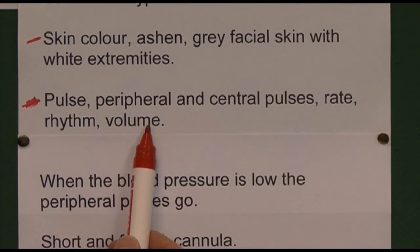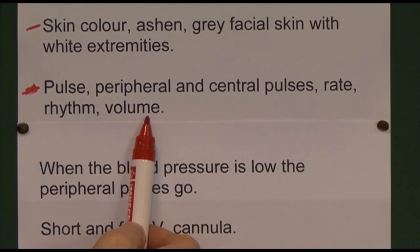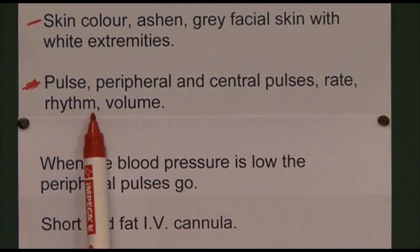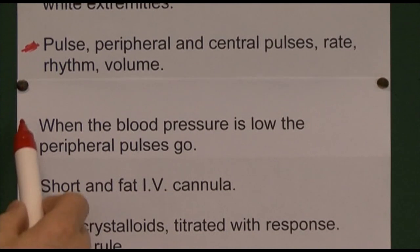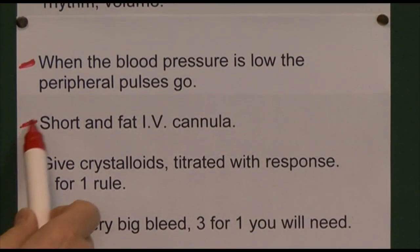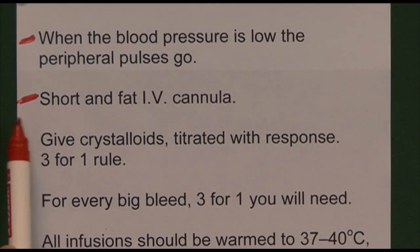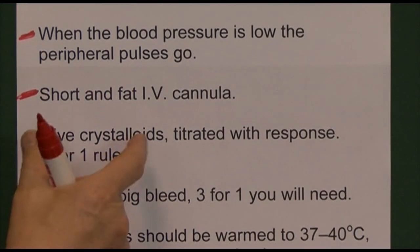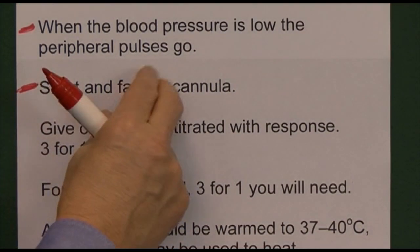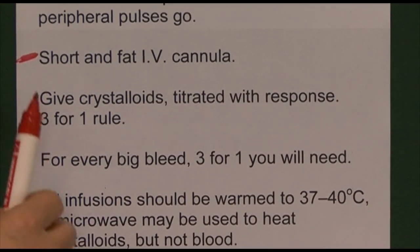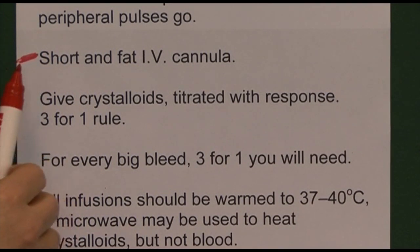The volume of blood going through the arterial system per cardiac contraction will be reduced — fast, weak, thready. Check central pulses because when blood pressure is low, peripheral pulses may disappear. We need to get large-bore, short intravenous catheters into these patients — fluid flows quickly through a short, wide catheter — and we need at least two, probably one in each arm, to get large amounts of intravenous fluids in rapidly.